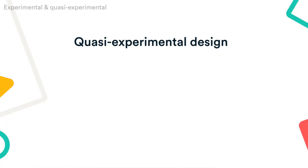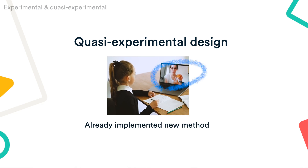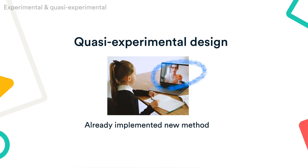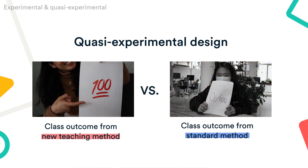If it isn't possible to randomly sort your subjects into groups, another option is the quasi-experimental design. This means comparing the outcomes of pre-existing groups that differ on an independent variable. For example, if one teacher in the school has already decided to implement the new teaching method, you could test whether her class outcomes differ from comparable classes that use the standard method.